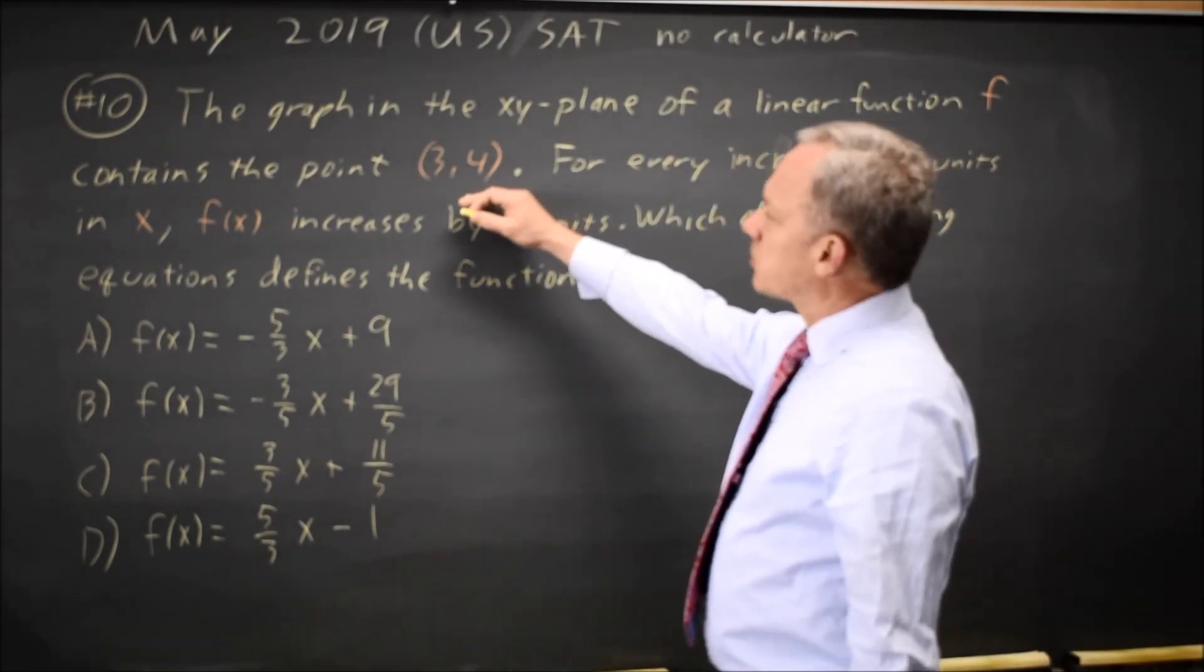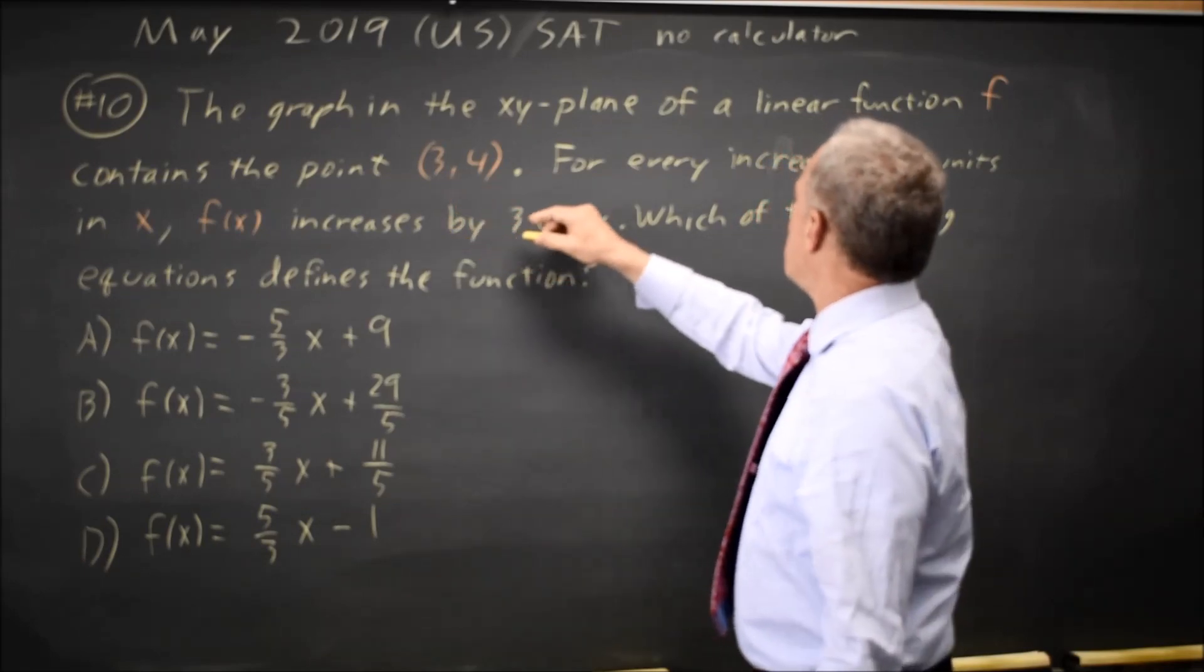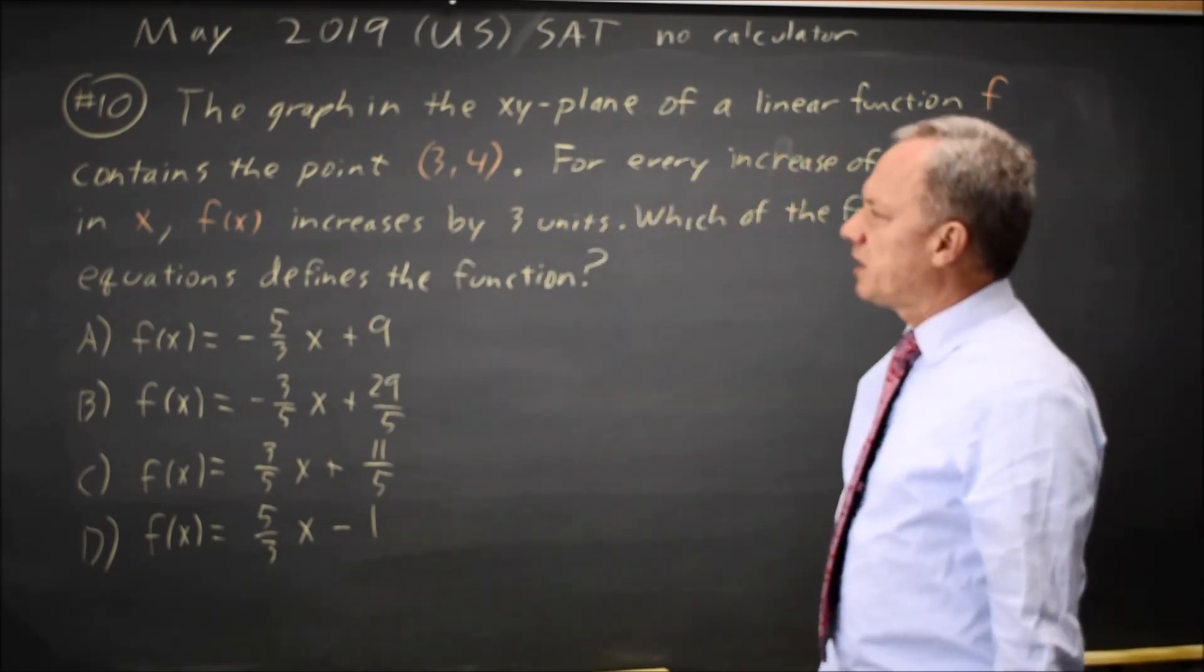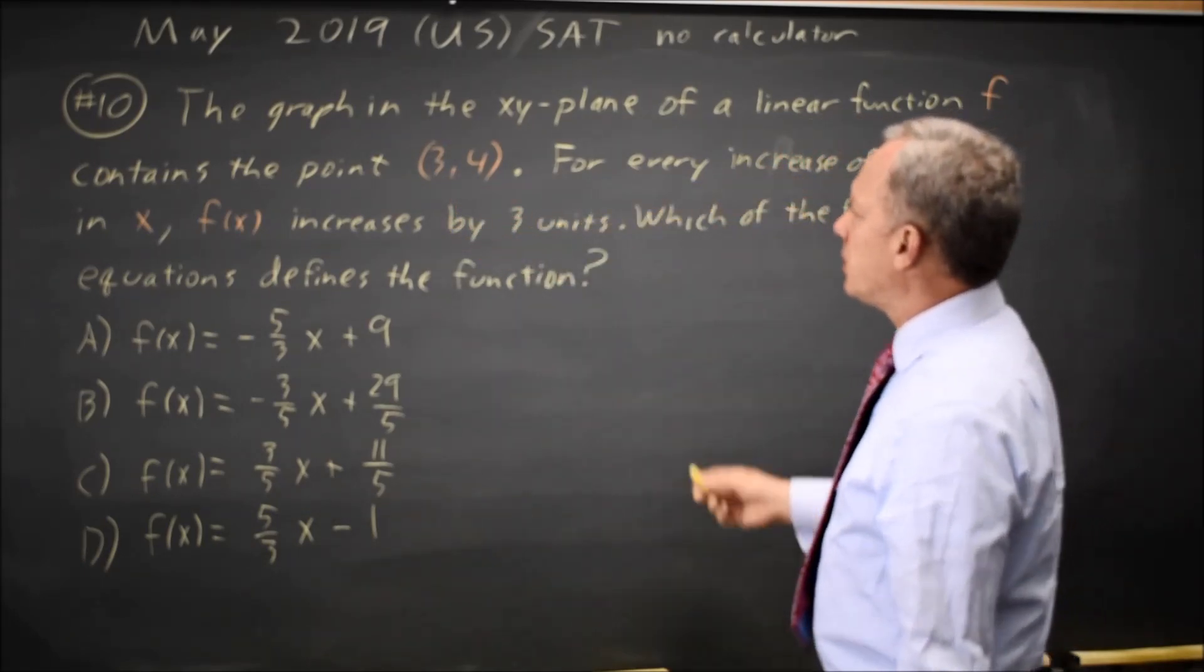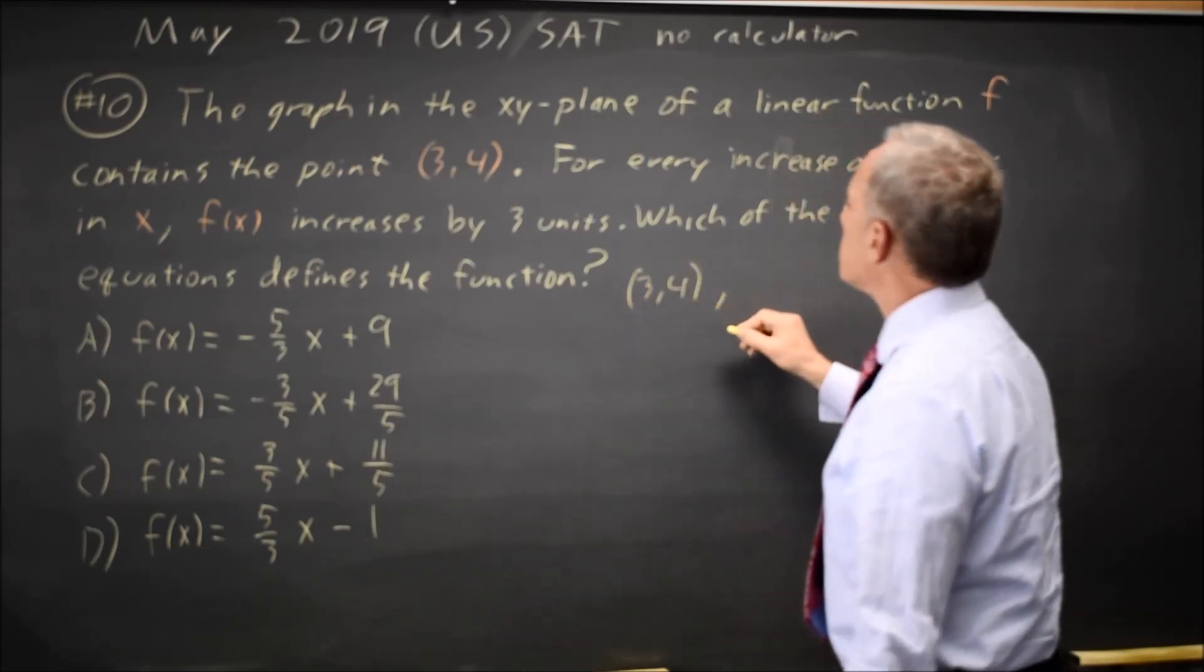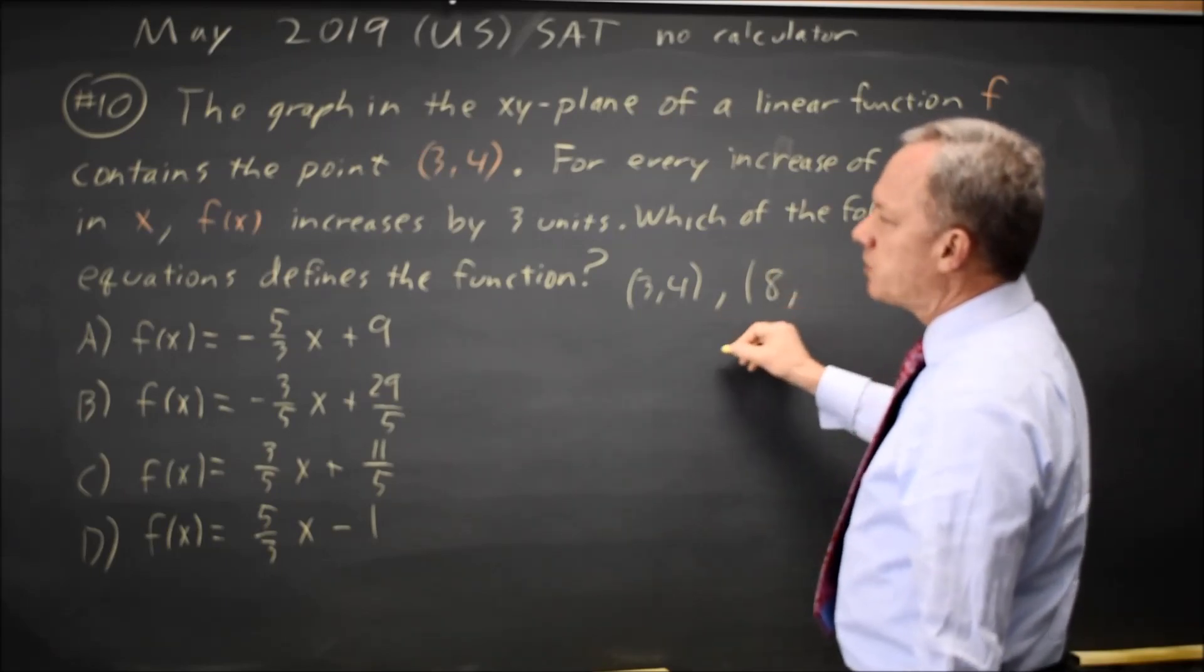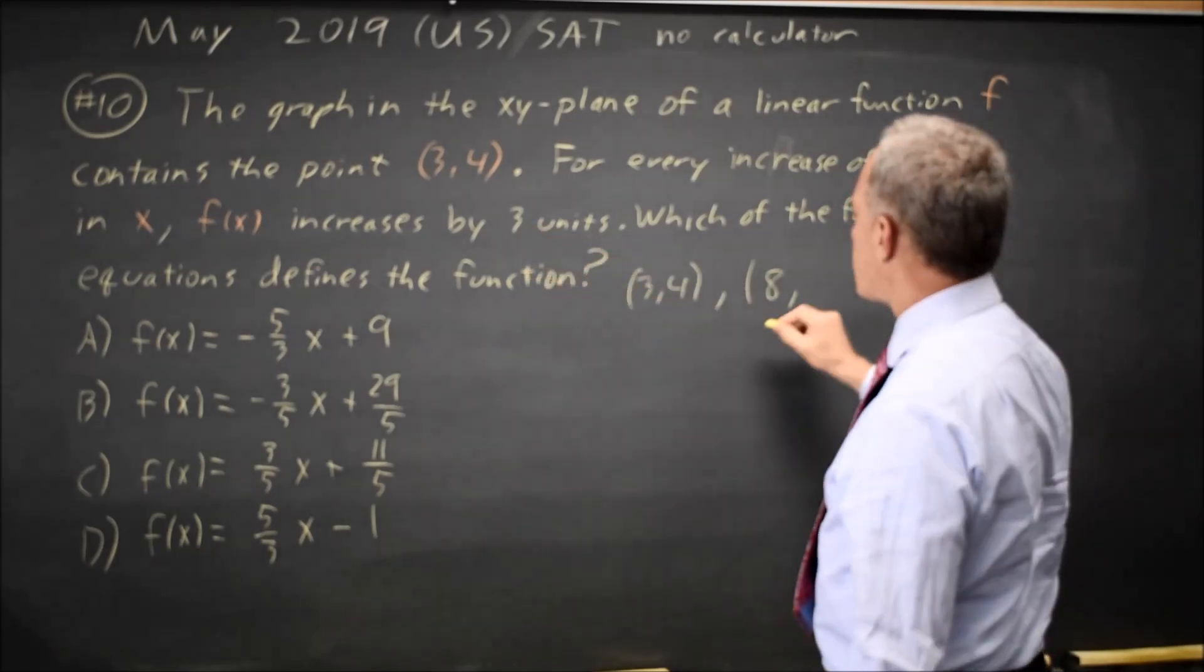The College Board gives us a description of a linear equation that passes through the point (3, 4), and for every increase of 5 in x, f(x) increases by 3. So in addition to the point (3, 4), we have the point: increase x by 5, so that would be 8, increase y f(x) by 3, 4 plus 3 is 7.